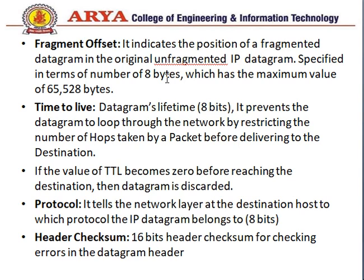For the More Fragments bit, if it is 0 that means it is the last fragment and no further fragments are available in the network. If it is set to 1, it means it is not the last fragment and more fragments are available for that particular data. Next is fragment offset, which defines the original position of the fragmented data in the unfragmented portion.